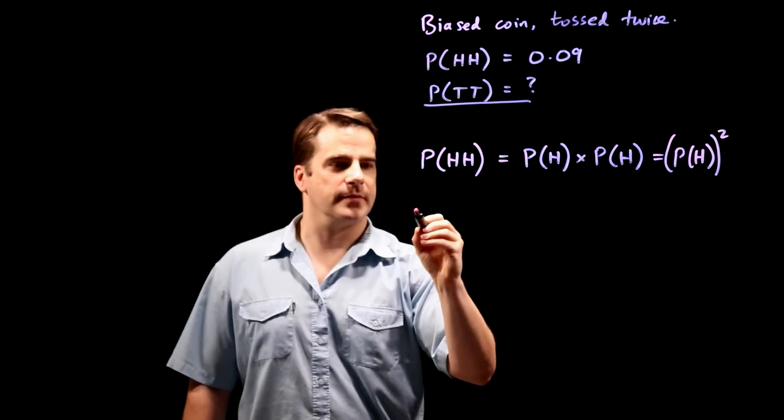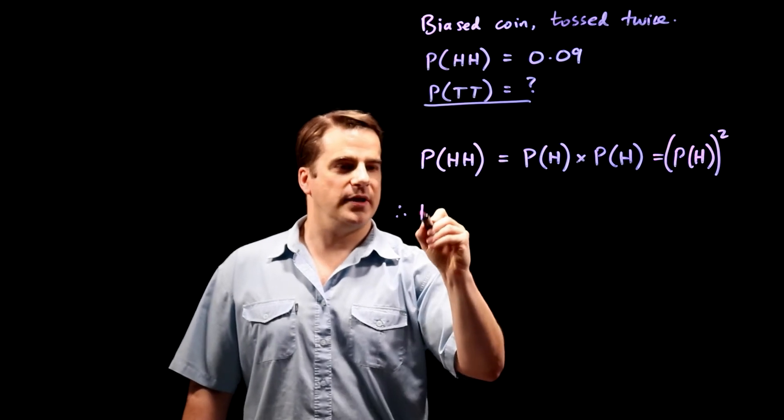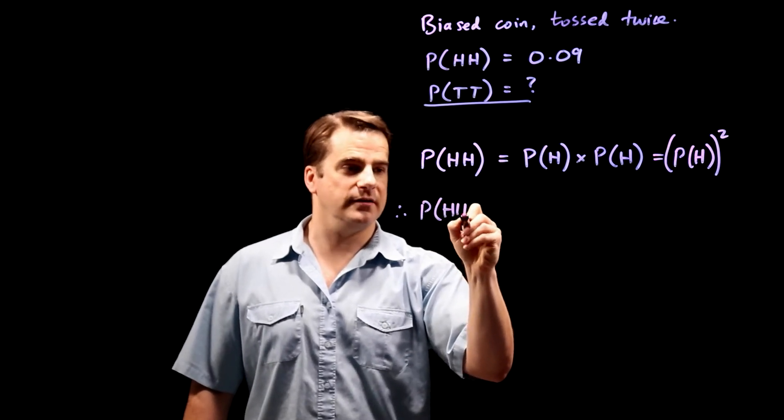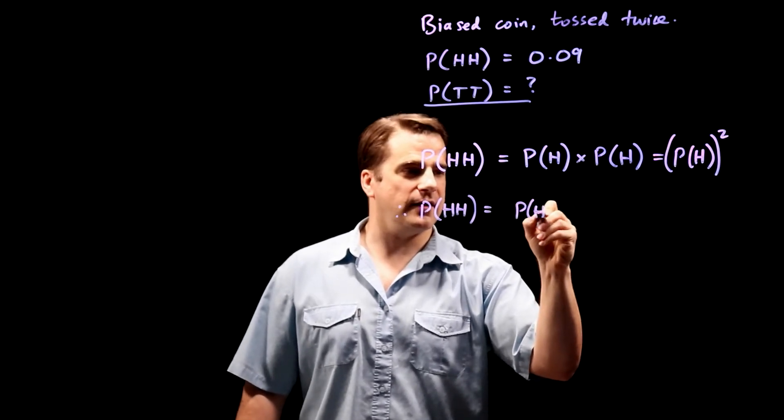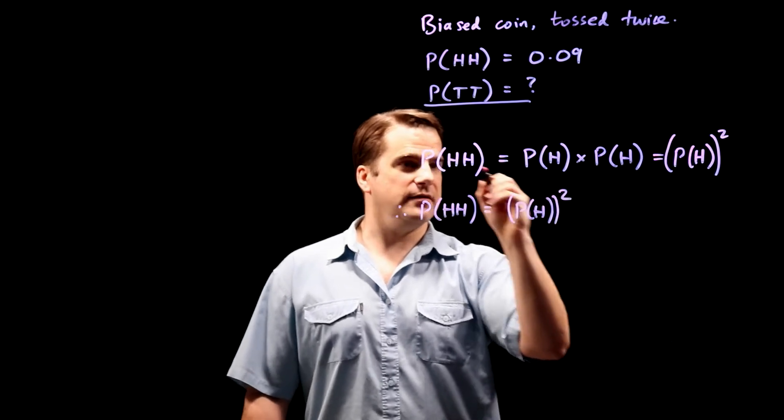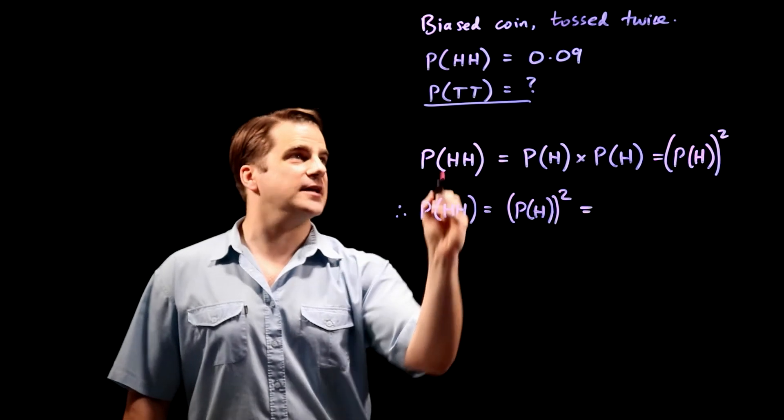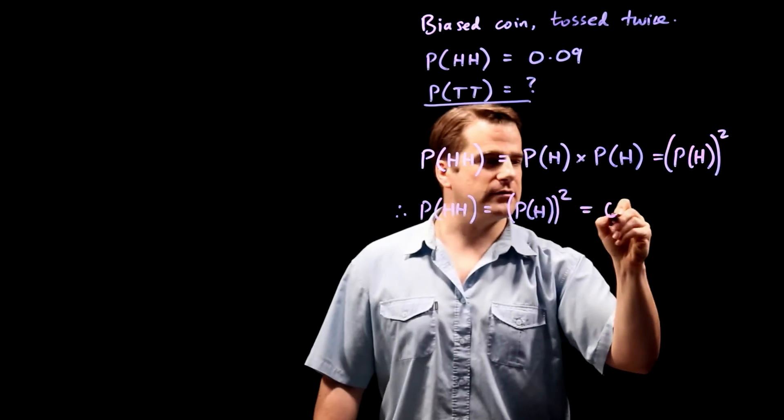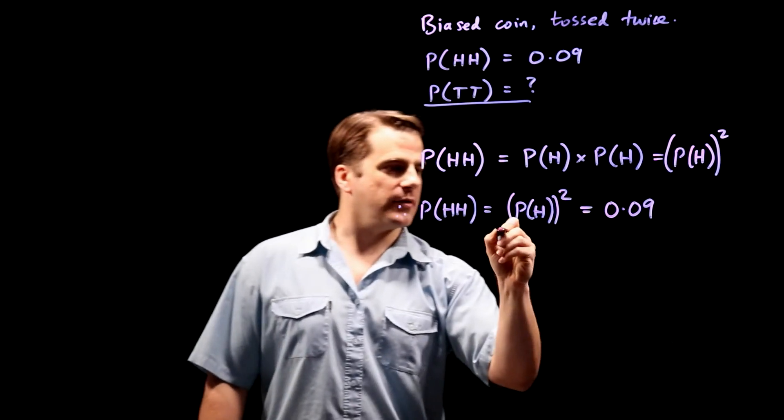So, therefore, P of getting two heads is the probability of getting a head with a single flip, squared, just repeating that, but we're also told that P(HH) is 0.09. Okay, and we're going to use that.